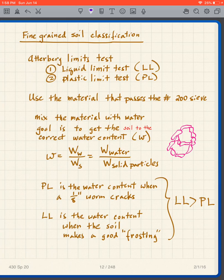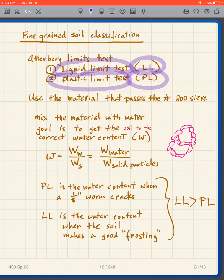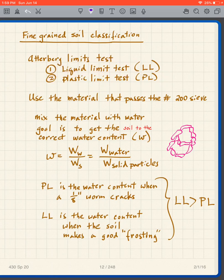After that we look at the fine-grained soil classification, which is based on what we call the Atterberg limits tests. We have the liquid limit test, abbreviated LL, and the plastic limit test, abbreviated PL. The plastic limit test result is labeled PL and the liquid limit test result is labeled LL.